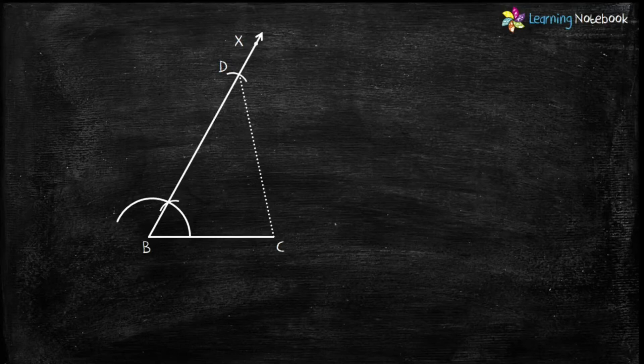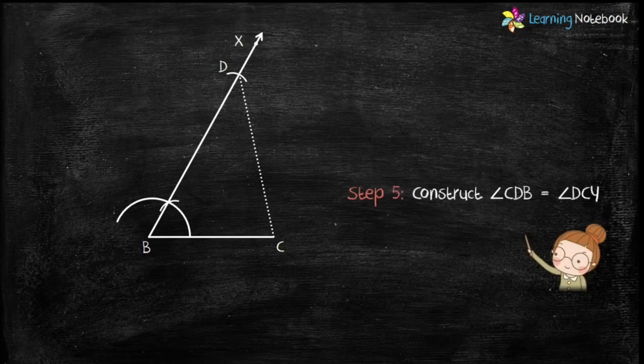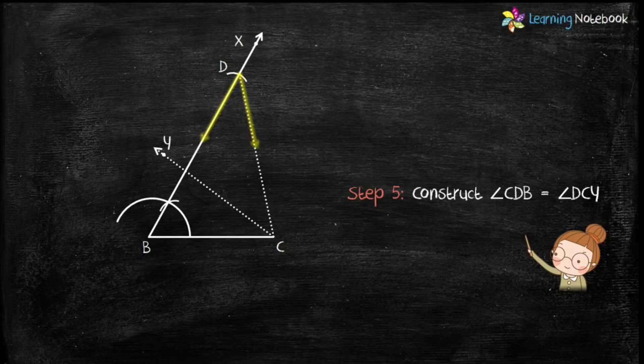Now students, Step 5 is very important step, so do watch this step carefully as most of the students make mistake in this step. Here we are going to make angle CDB equals to angle DCY. Let's see how to do this.